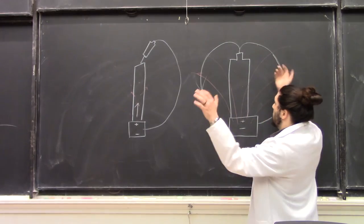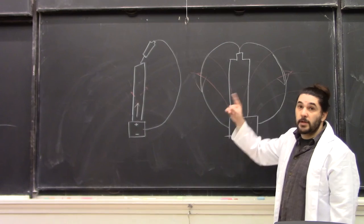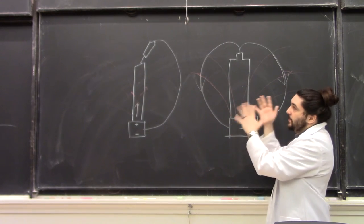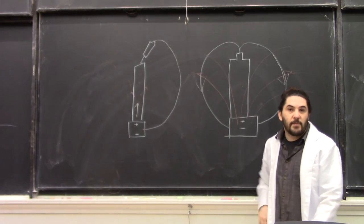So this wire is going to spin, and since the magnetic field is cylindrically symmetric, no matter how much the wire spins it's always going to be in this same configuration, so it'll just keep spinning until it loses stability and falls off the battery.